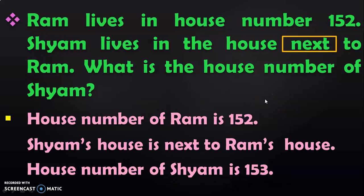When the same sum is given as 'write the after number of 152', children will be able to write it down easily. But when you give it in the form of a statement problem, it is important for the child to develop the skill to comprehend the problem, write down the information given, and then solve and write down the answer. This is a very simple statement problem because we are in class 2 now. But as the child moves into higher classes, the statement problems will become more complex. So it is very important to train children to understand statement problems from the lower classes.